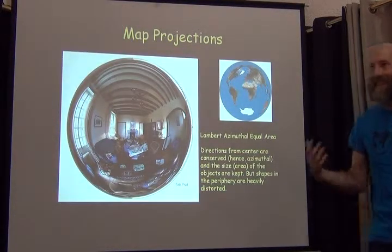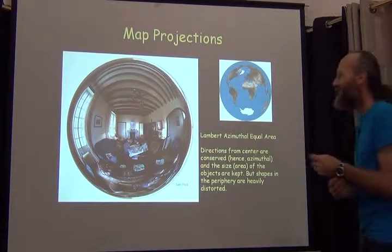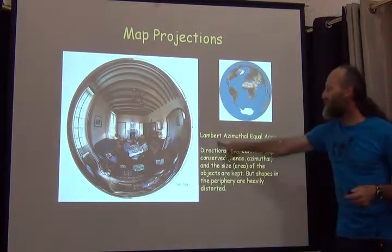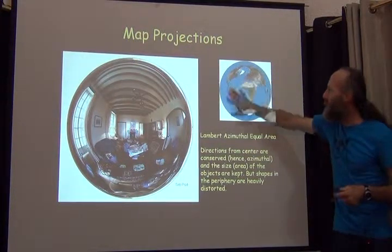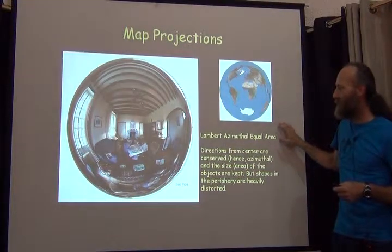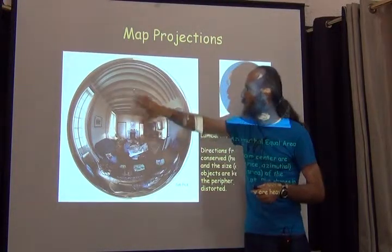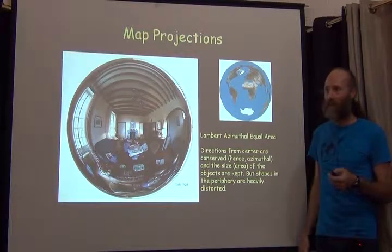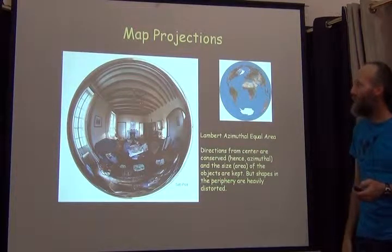To help you get an idea of the kinds of things that projections do, here's a picture of a room as it would appear using the Lambert-Azimuthal equal area projection. This is what the map of the Earth looks like, and you can see there are distortions out to the side. It's kind of easier to understand when you look at a room and all the things that happen to it. We're distorting it so we can put it on a flat surface.